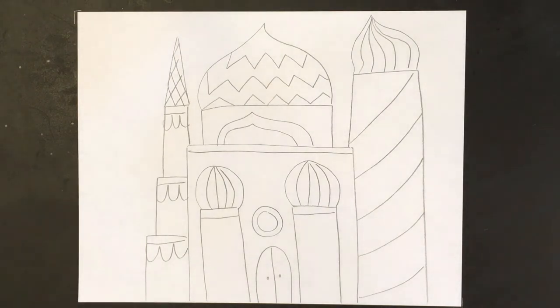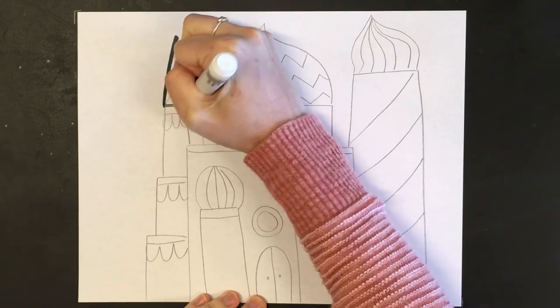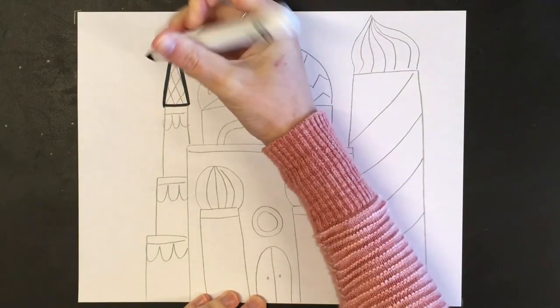I finished adding all of my patterns with pencil, and now I'm ready to outline or trace my project. For this you can use a marker or a black crayon. I'm going to take my marker and trace all of my designs that I added.